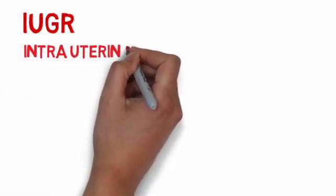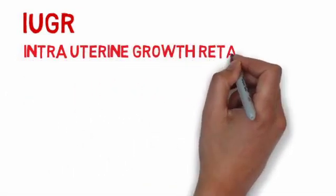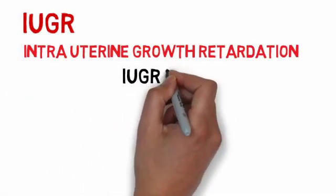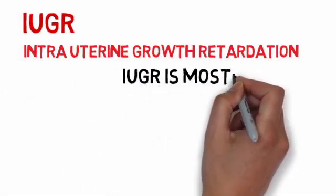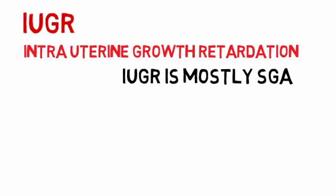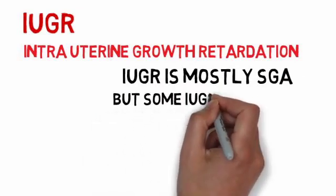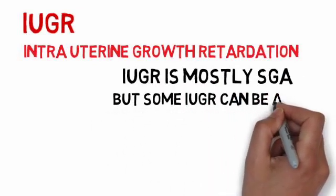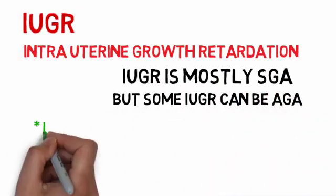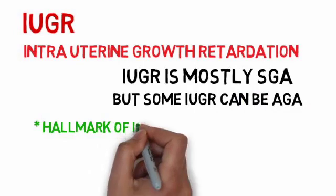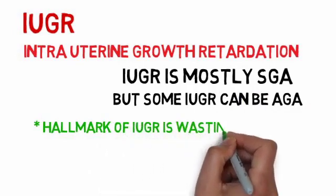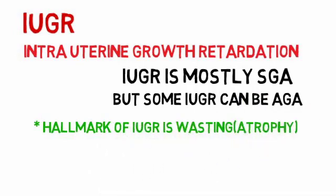Now we discuss IUGR, which stands for intrauterine growth retardation. IUGR is mostly small for gestational age, but some IUGR can also be adequate for gestational age. The hallmark of IUGR is wasting, i.e., atrophy.